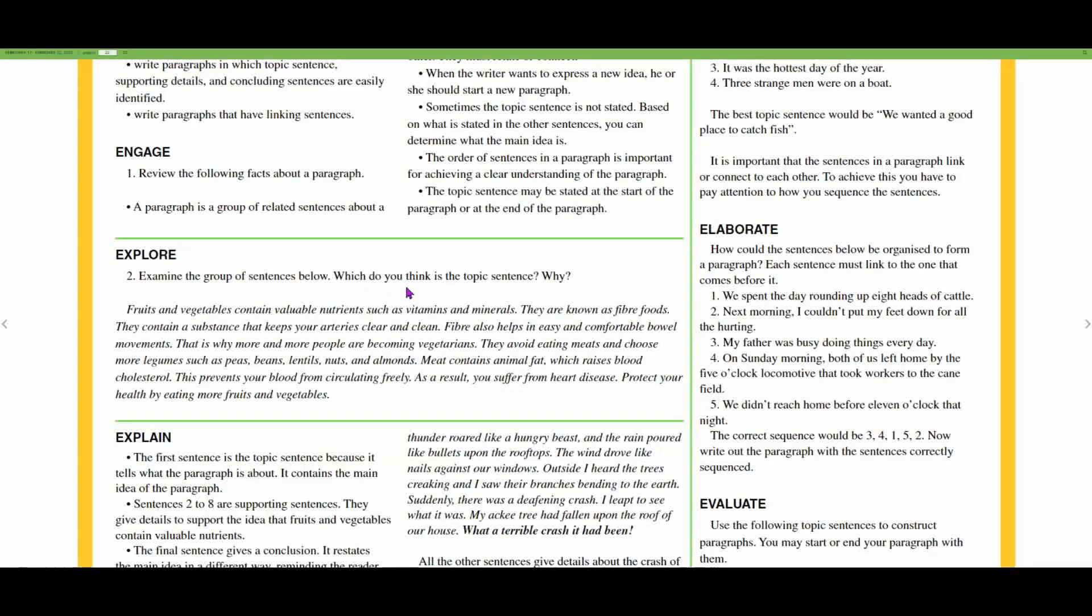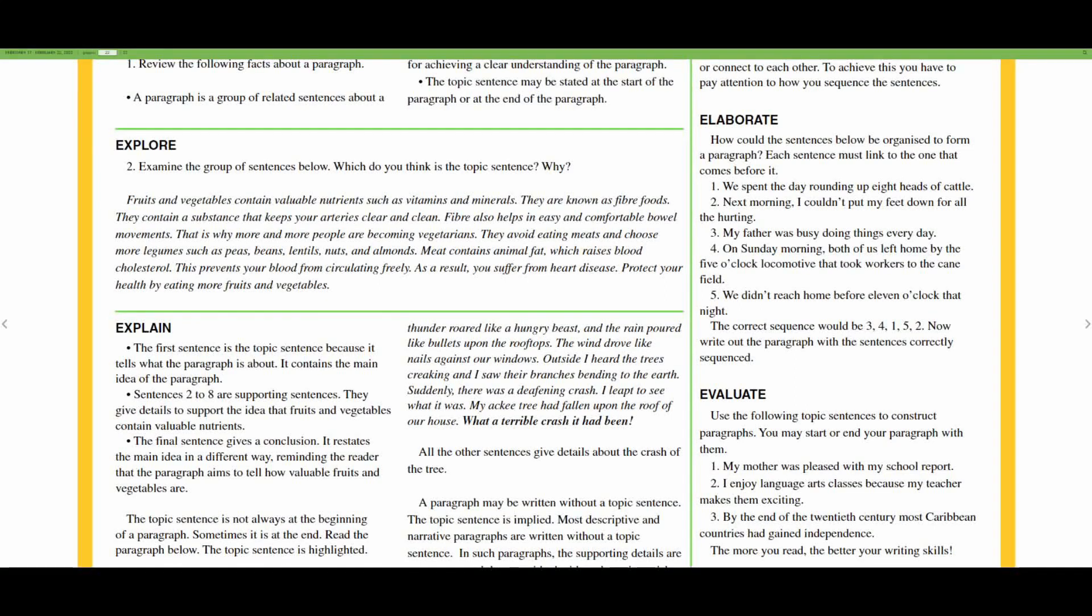So examine the sentences below. Which do you think is a topic sentence and why? Explain. The first sentence is a topic sentence because it tells you what the paragraph is about. It contains the main idea of the paragraph. Sentences two to eight are supporting sentences. They give details to support the idea that fruits and vegetables contain valuable nutrients.